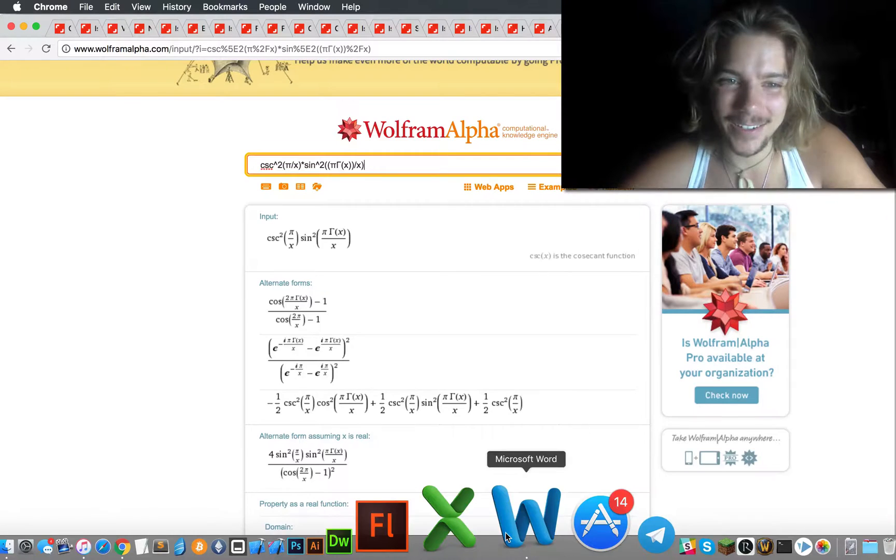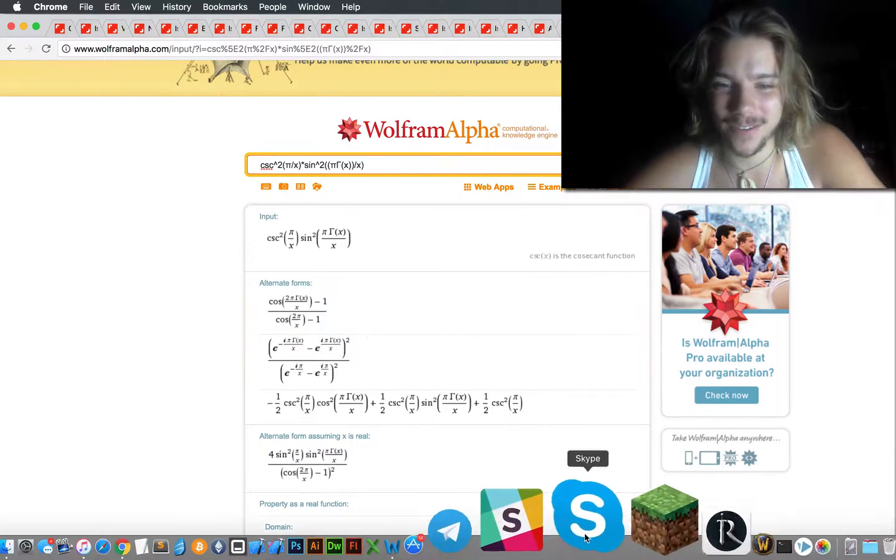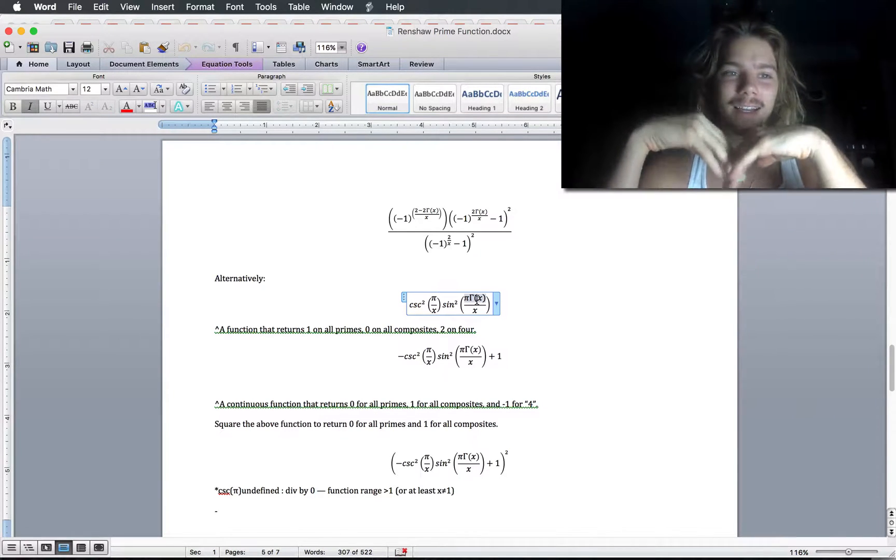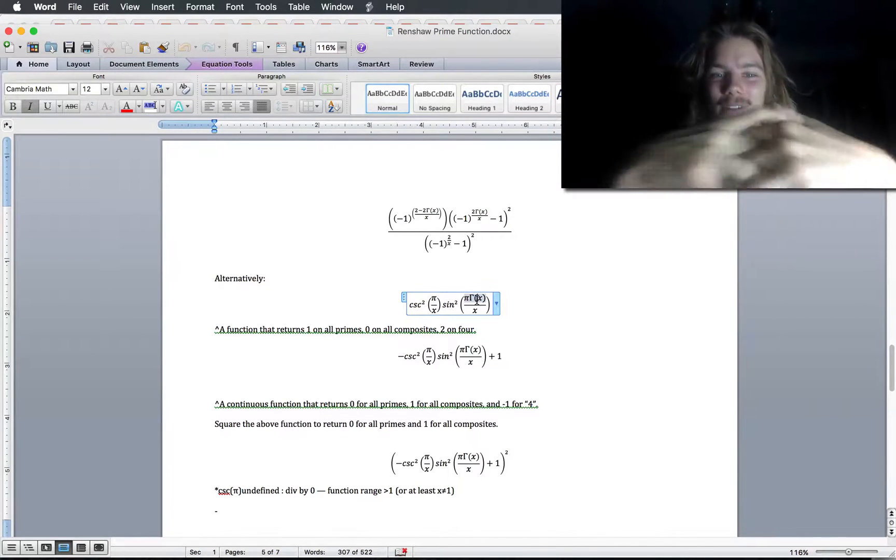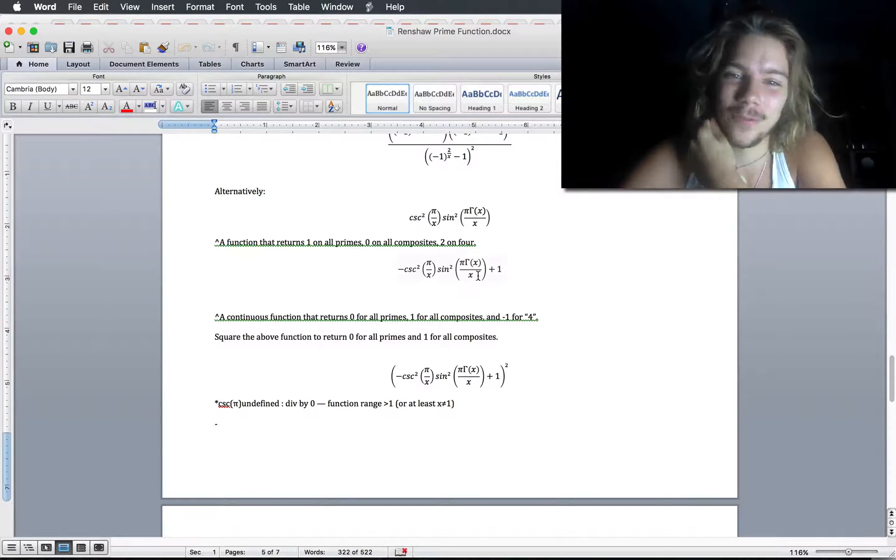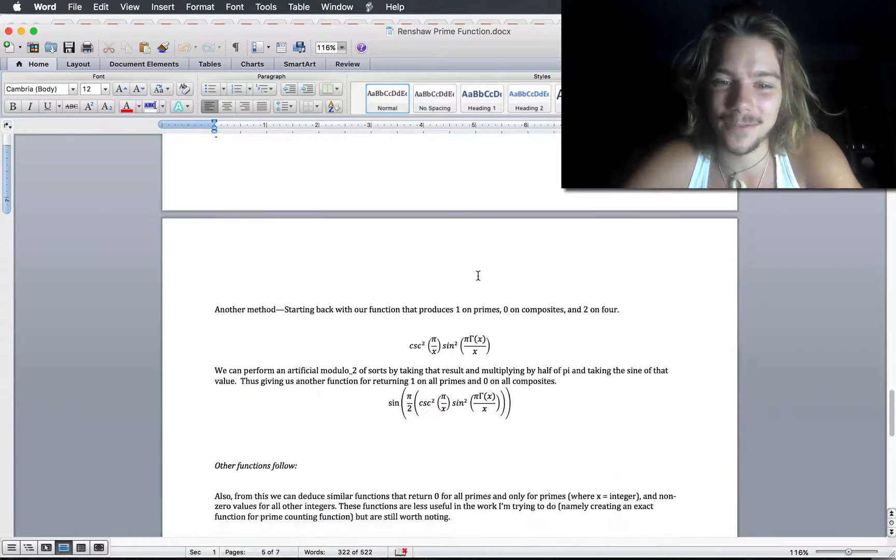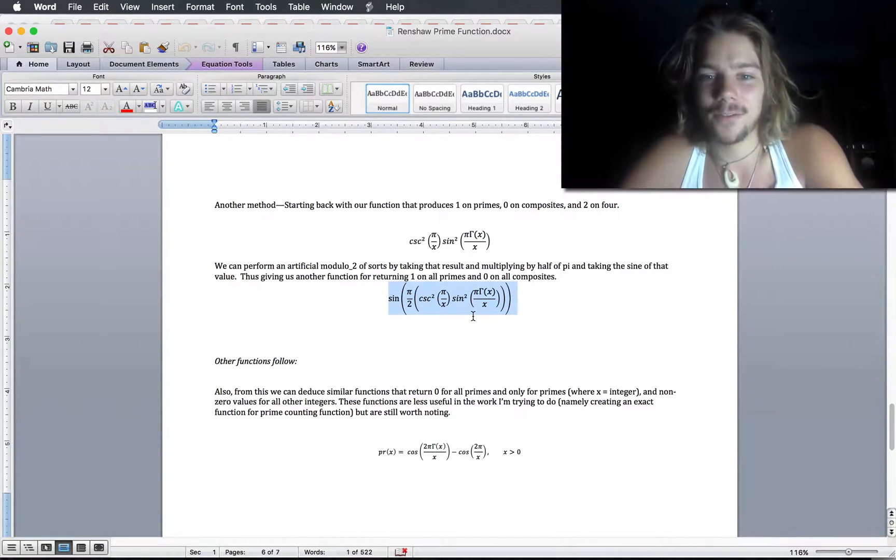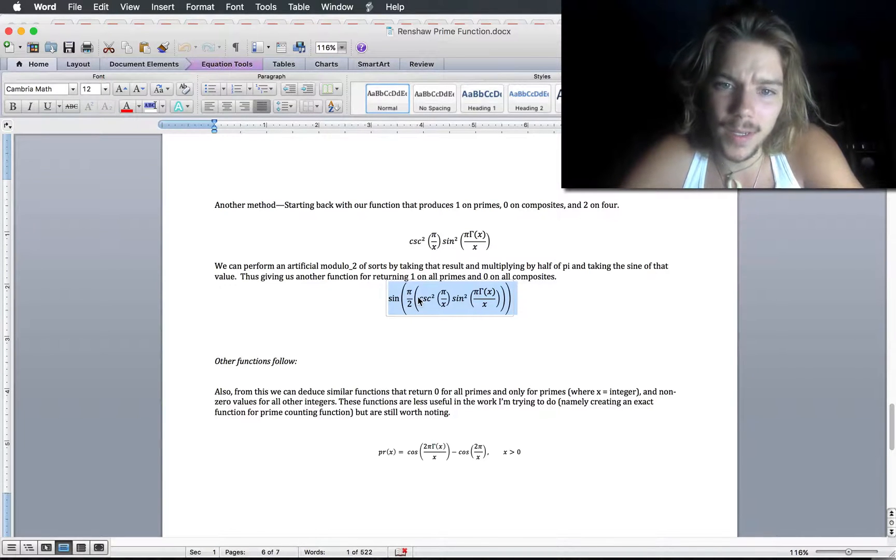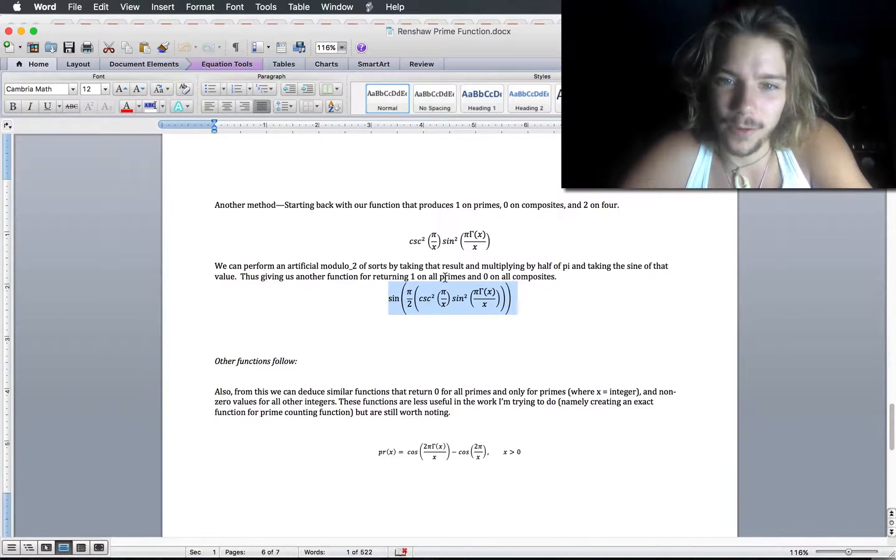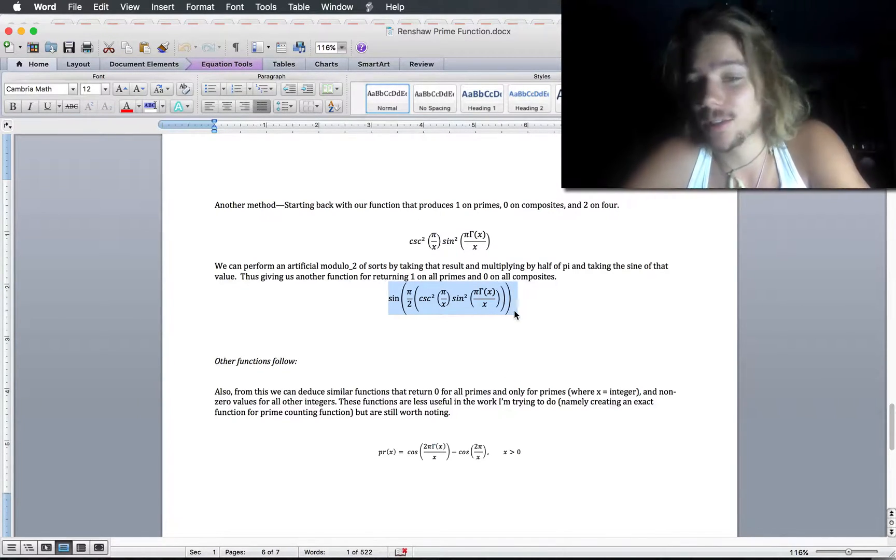You can't really accomplish anything useful with it in terms of like integrals and stuff to try and figure out the number of primes beneath a given x or something like that. But anyways, I can account for the 4 error and fix that and everything and I've done that later on. And using some modulo math and simplifying that as well, I'm able to come up with this final state of a function. Sine of pi over 2 times cosecant squared pi over x sine squared pi gamma x. This is a function that will return 1 for all primes, 0 for all composites, including 4.